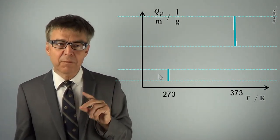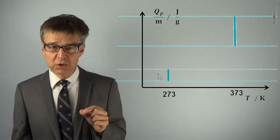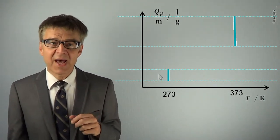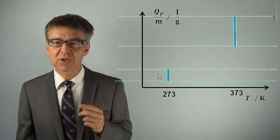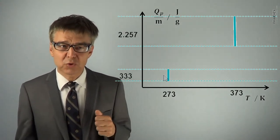In detail, we have measured two amounts of latent heat. The specific heat of fusion of 333J per gram and the specific heat of vaporization of 2257J per gram.